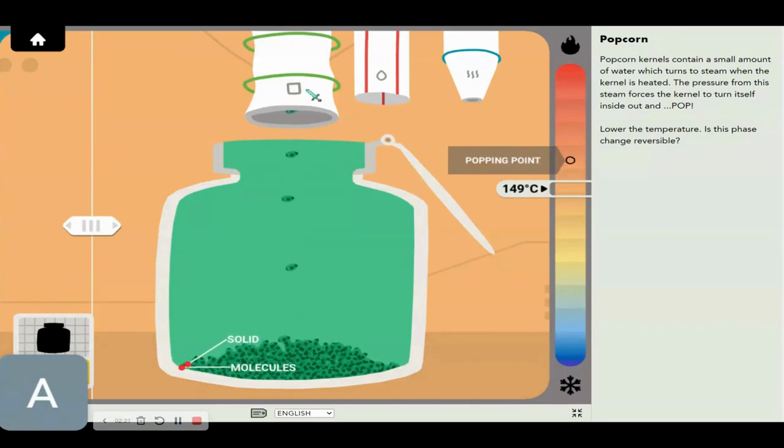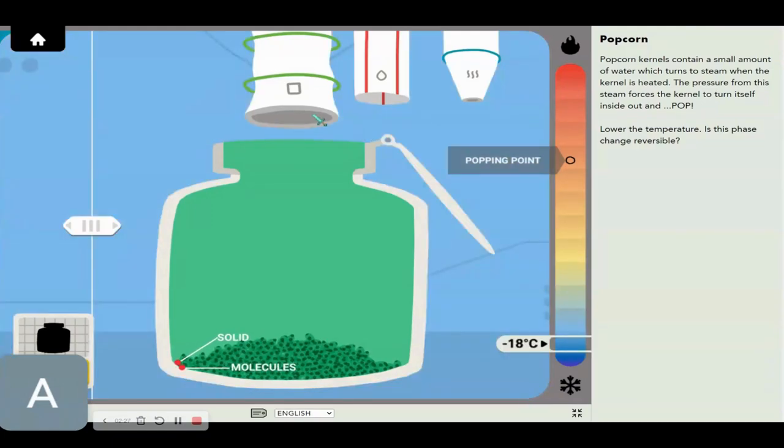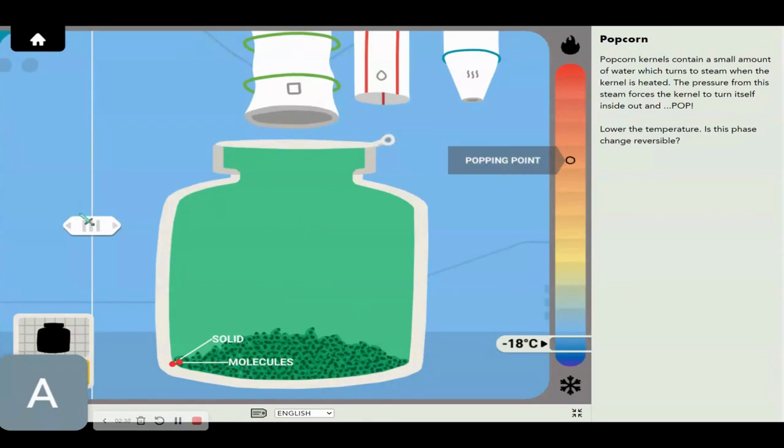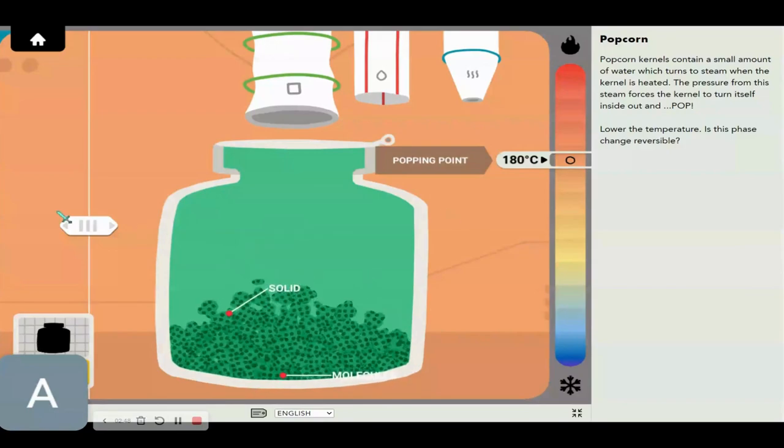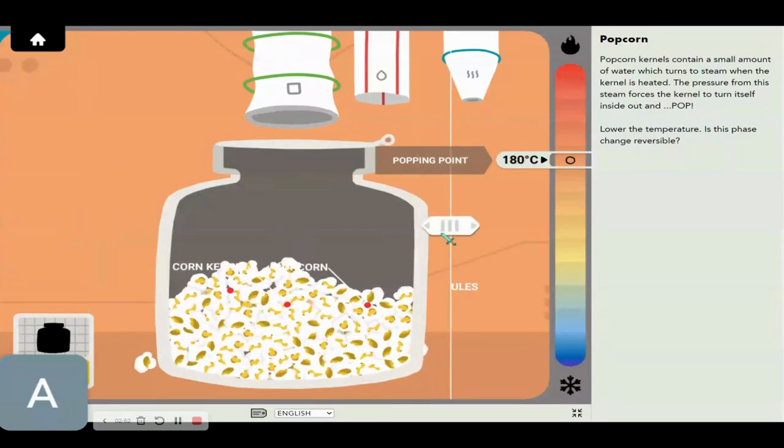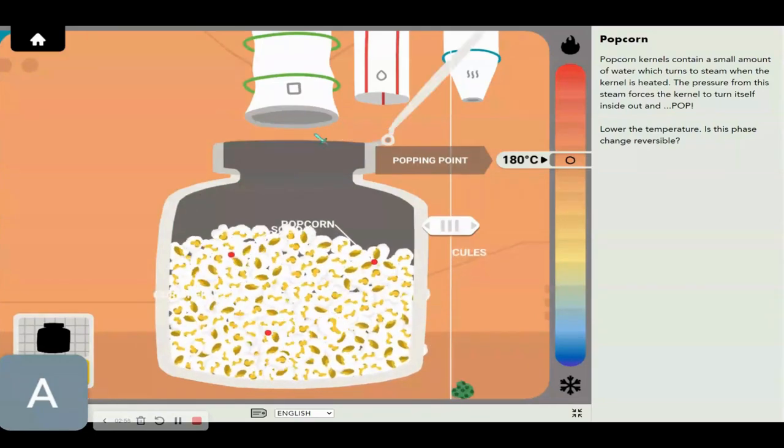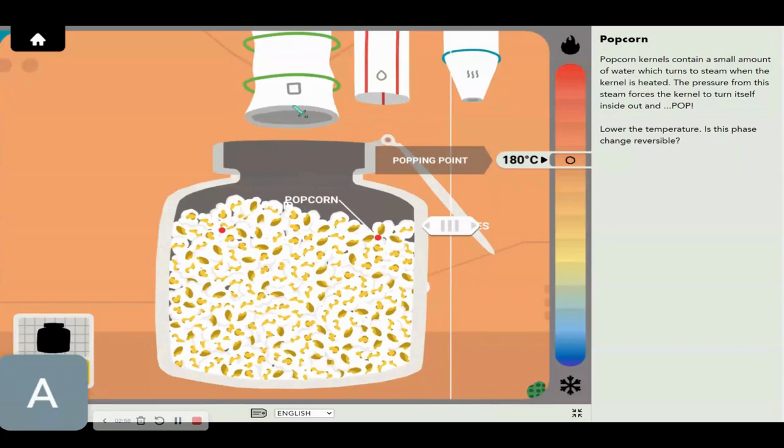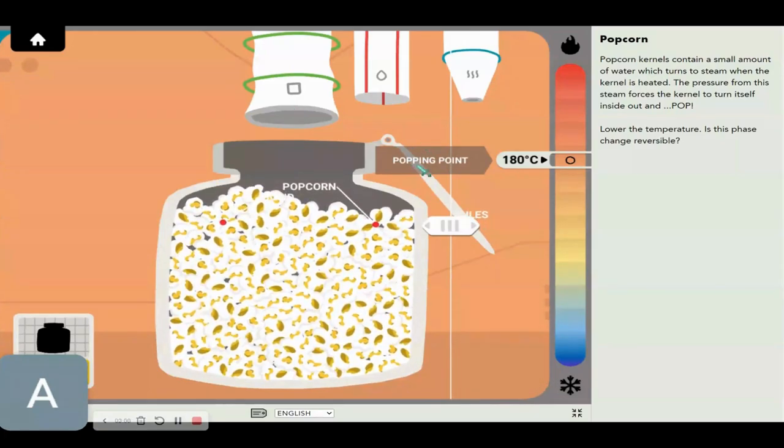But anyhow, this is a solid. A solid can't flow unless it is made of super small grains like popcorn or sand or even pepper or salt, something like that. Well, that's a ton of popcorn, isn't it? It really is a ton of popcorn.